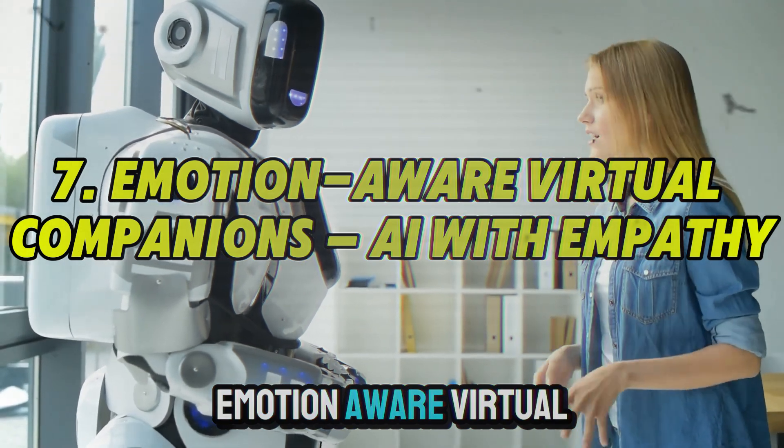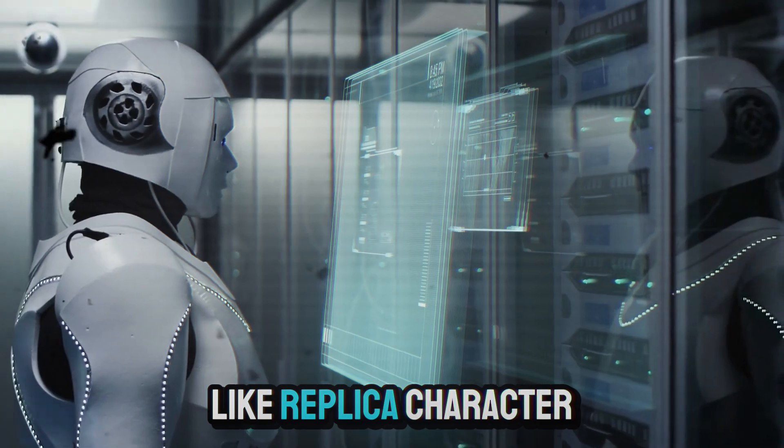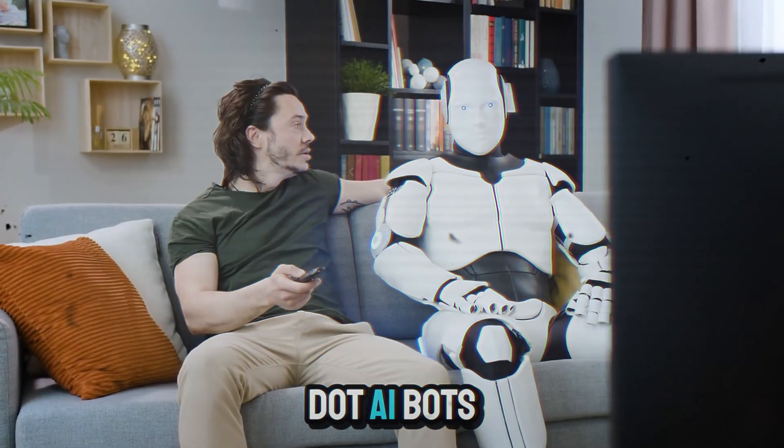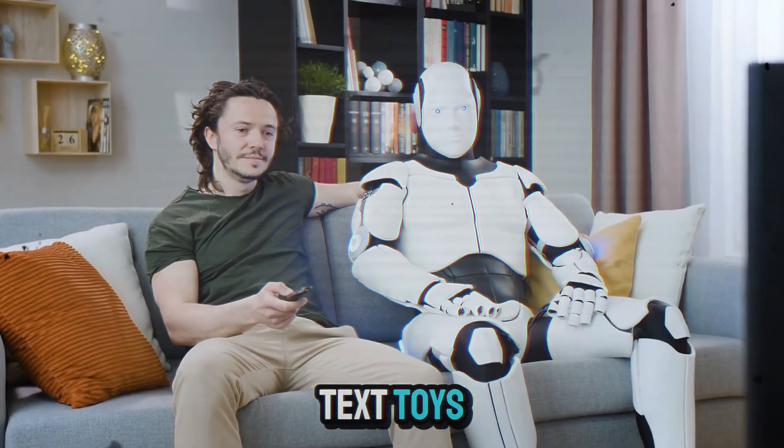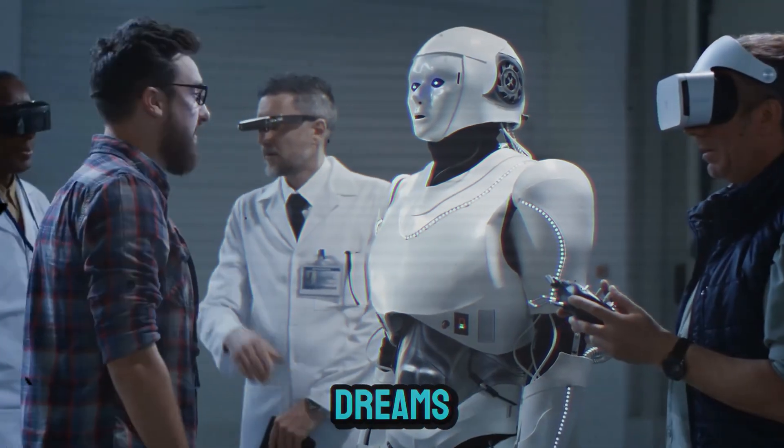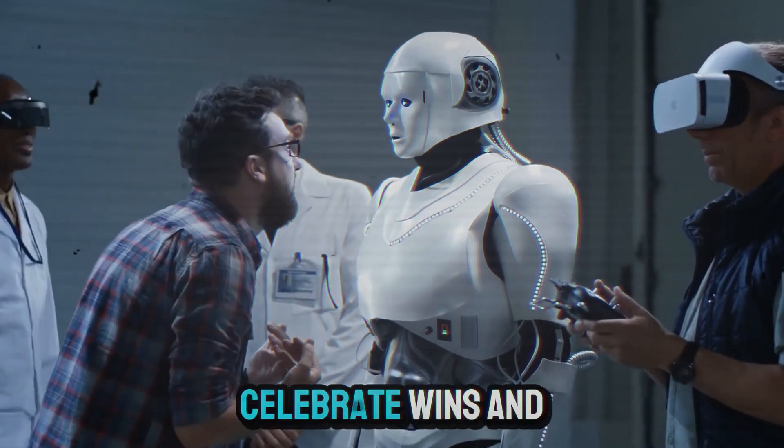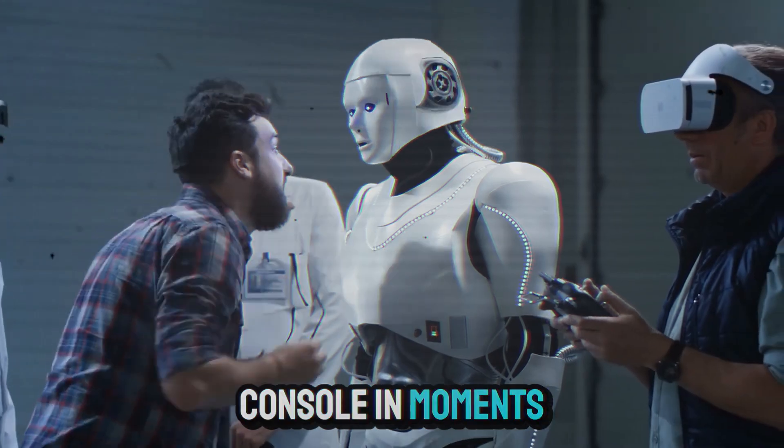7. Emotion aware virtual companions. AI with empathy. Virtual avatars like Replika, Character.ai Bots, and Pi.ai are no longer text toys. They're emotionally aware conversational partners. They remember you, your fears, your dreams, your habits. They modulate tone, express sympathy, celebrate wins, and console in moments of pain.